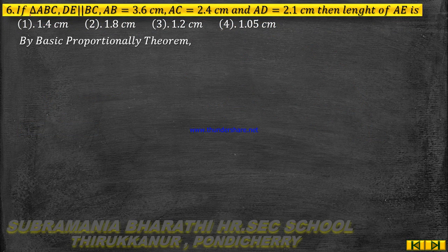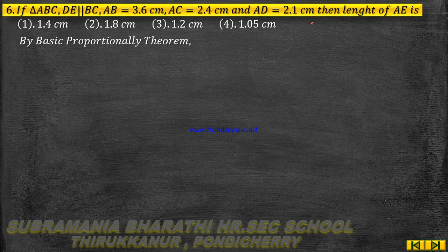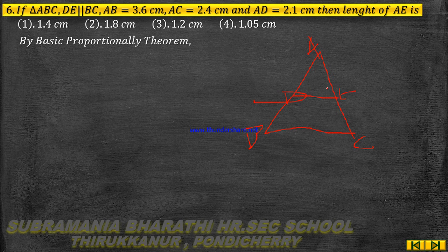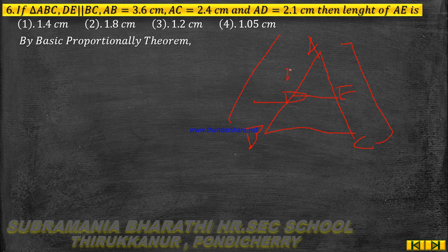Next, question 6: In triangle ABC, DE is parallel to BC. AB equals 3.6 cm, AC equals 2.4 cm, and AD equals 2.1 cm. Find the length of AE. By the basic proportionality theorem, we have AD by DB equals AE by EC. Triangle ABC has point D on AB and point E on AC.